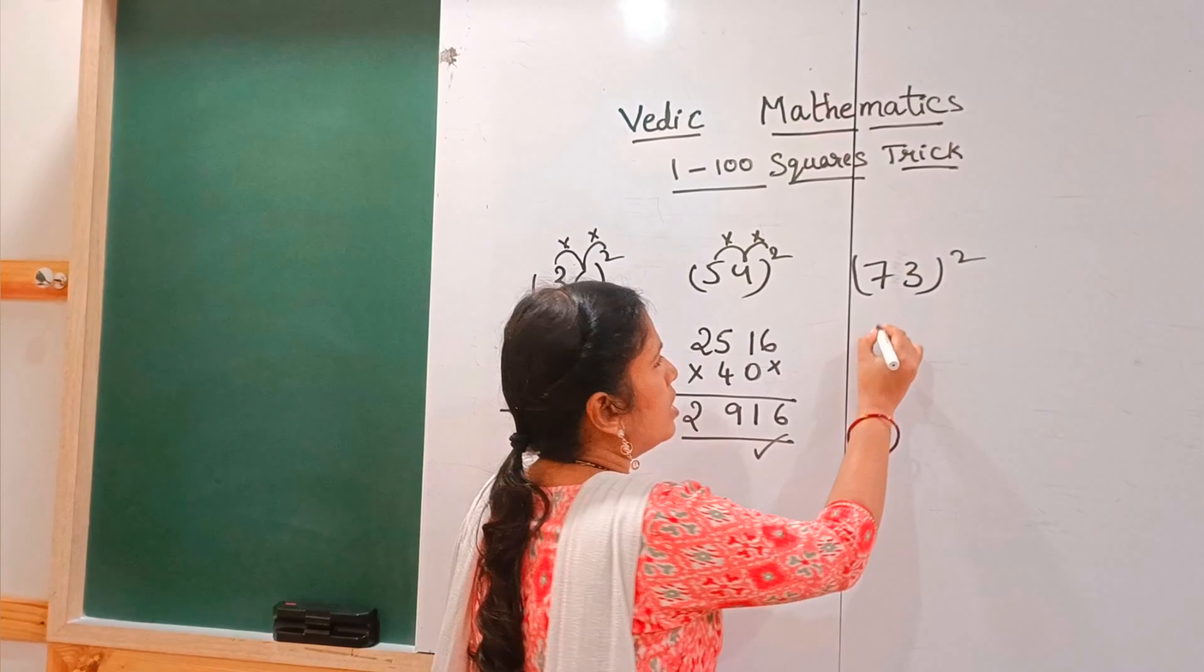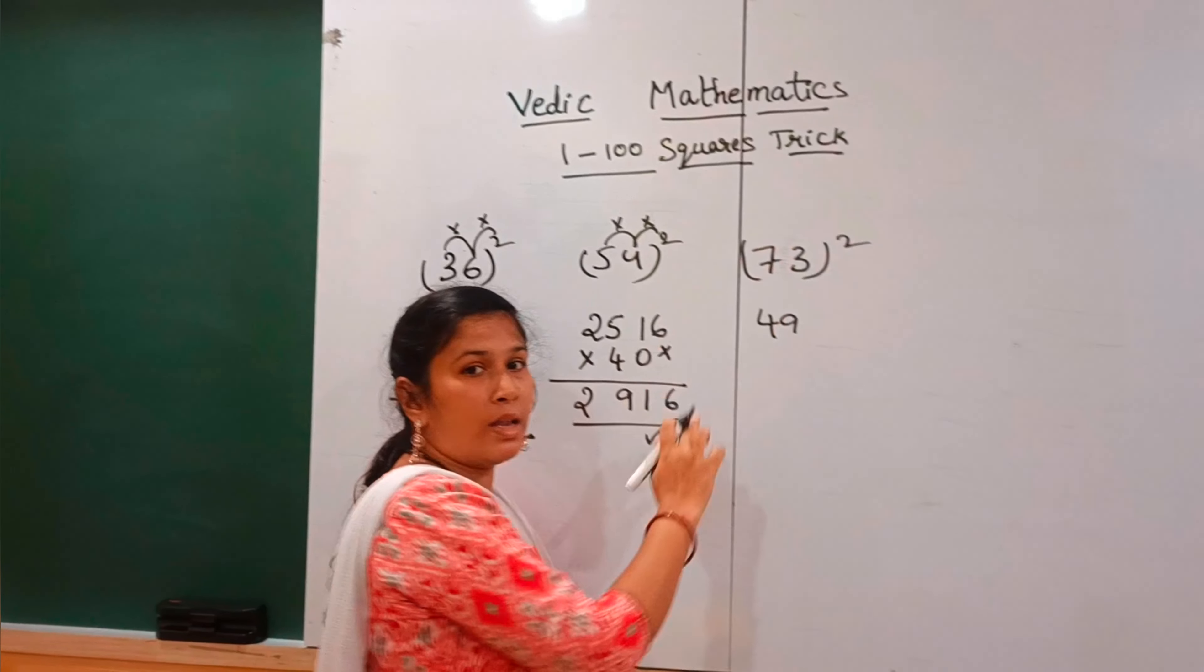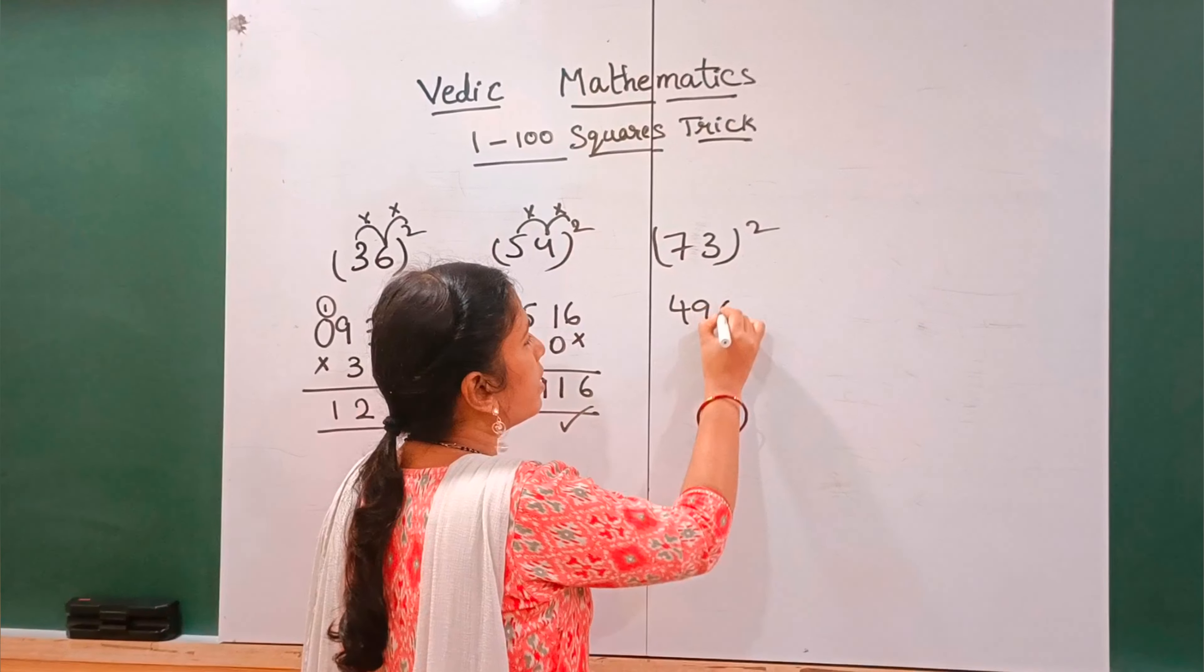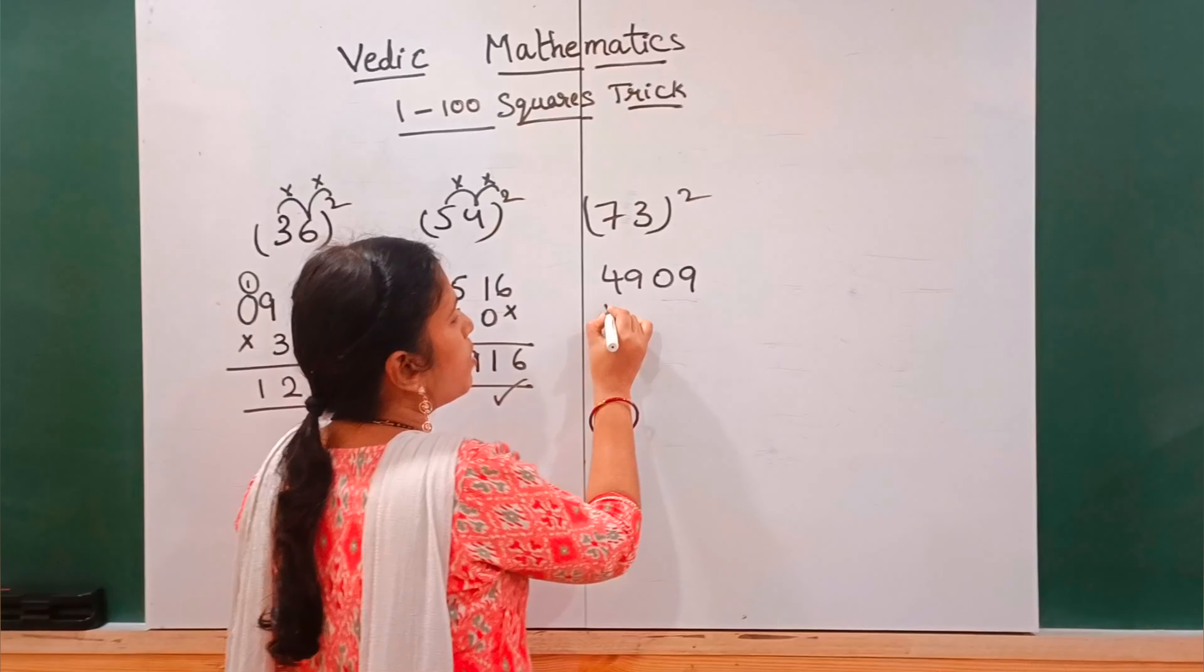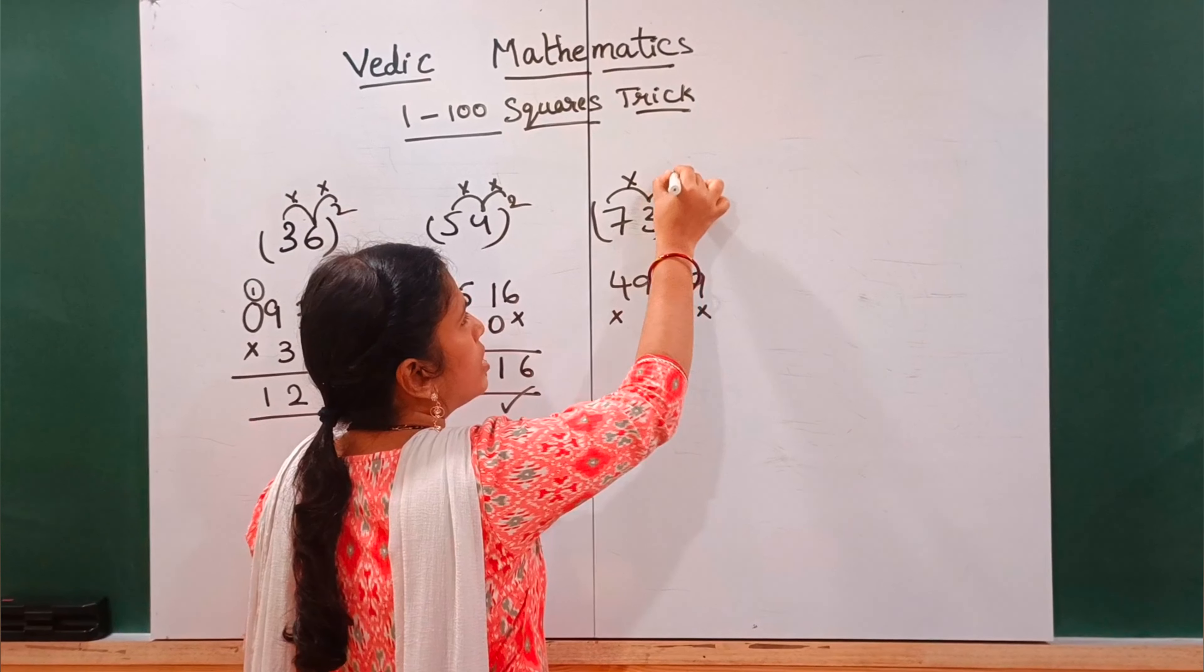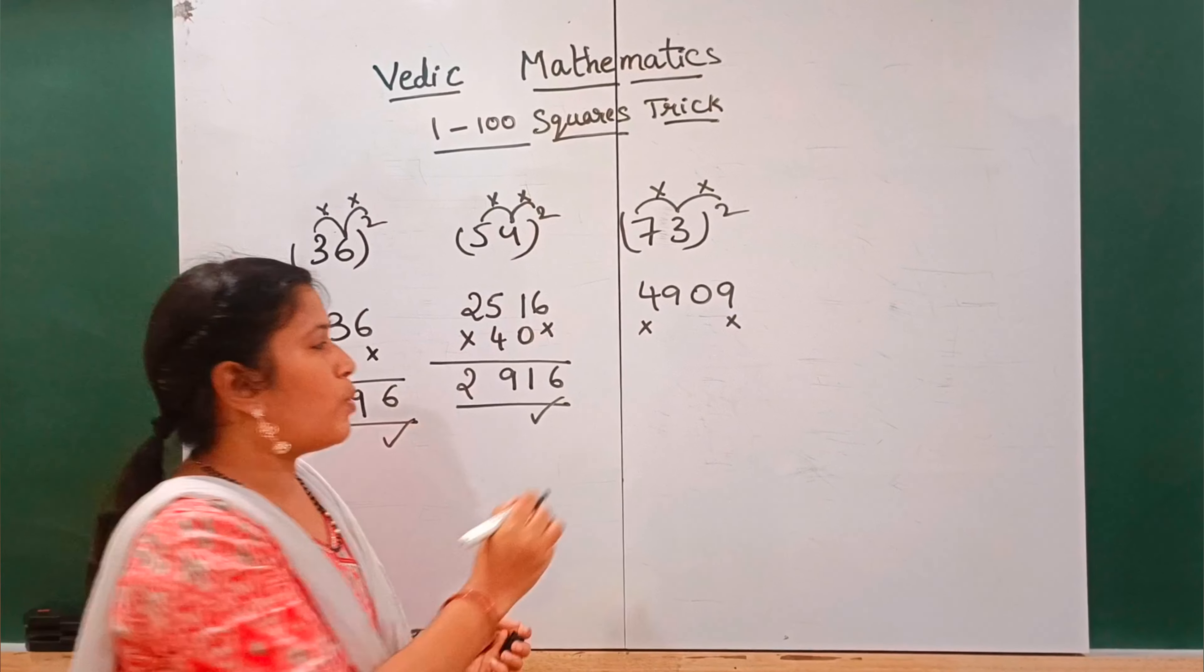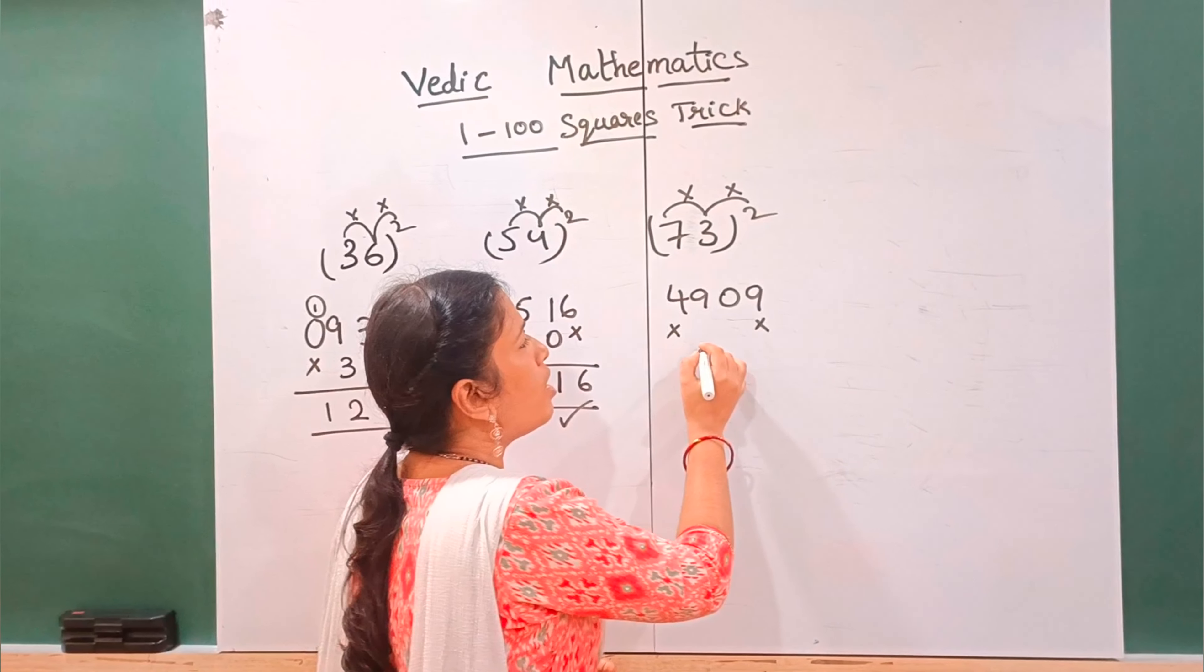So 73 square: 7 square is 49, 3 times 3 is 9. Now 9 and 9 is 0, carry over 9. Okay, if you see this, 7 into 3 into 2, 7 threes are 21, 21 into 2, 21 into 2 is 42.